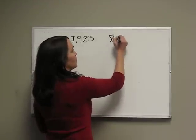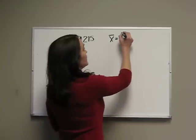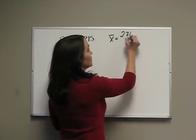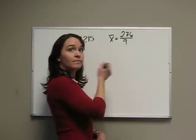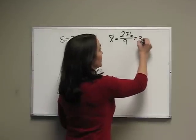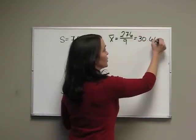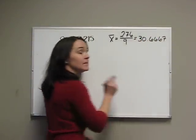For a sample, remember our symbol is X̄, we take the summation of X, which was 276, divide by how many there were, 9, and that will give us our sample mean, which is 30.6667.